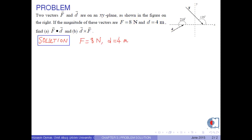First, we write the given quantities in xy units. f equals 8 newtons where the unit of newtons is an xy unit, d equals 4 meters where the unit of meters is also an xy unit.